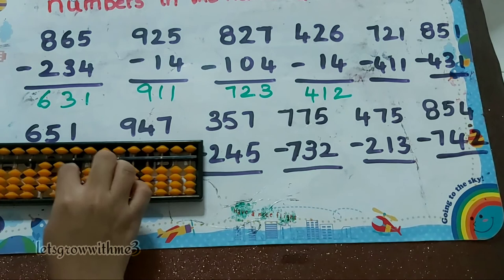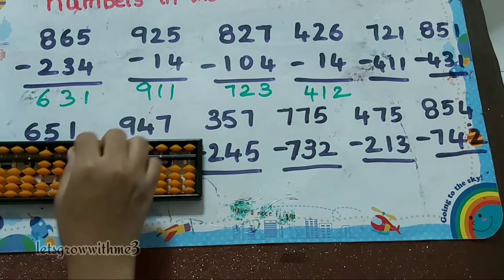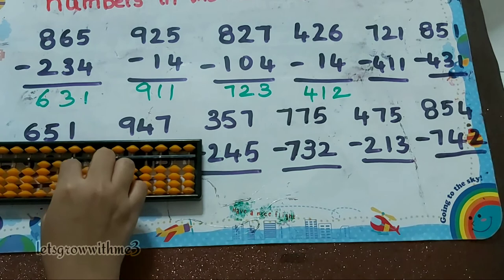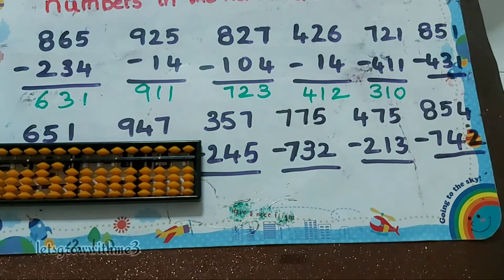Next one, 721 minus 411: minus 4, how to do minus 4? Minus 5 plus 1. Minus 1, minus 1. So the answer is 310.